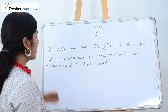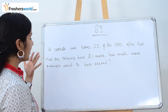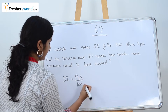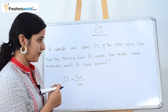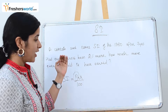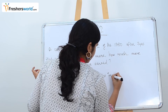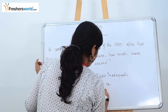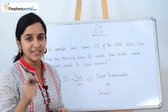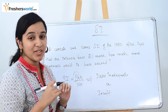A certain amount earns simple interest of 1750 rupees after 7 years. Had the interest been 2% more, how much more interest would it have earned? To find simple interest we need at least 3 variables to find the 4th. Here the principal is missing, so without the principal we cannot find the accumulated value. Therefore, the answer is that the data is inadequate or insufficient.